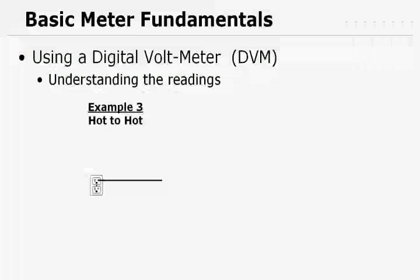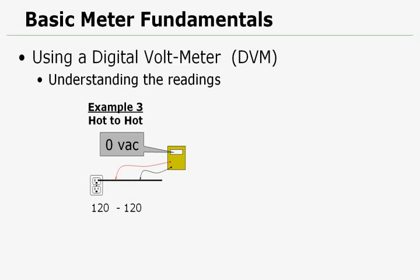In this next example, we're measuring the hot to the hot. That's giving us 120 volts and 120 volts. So there's zero difference in potential.